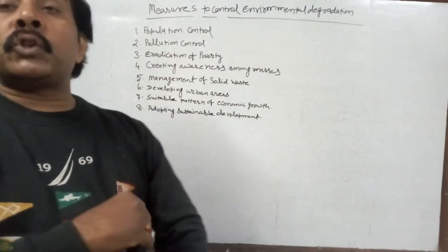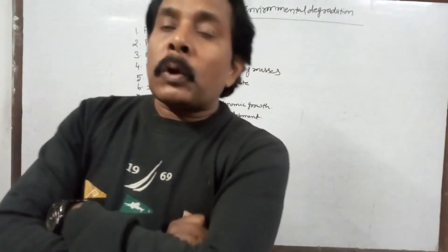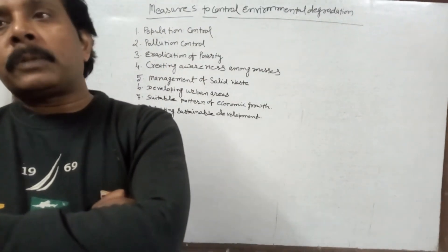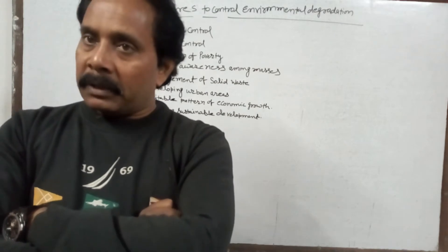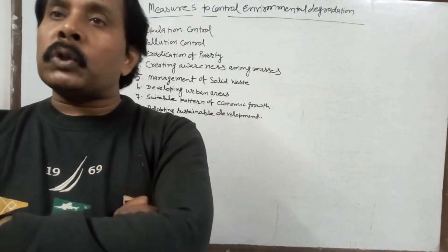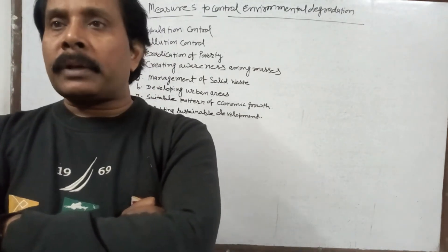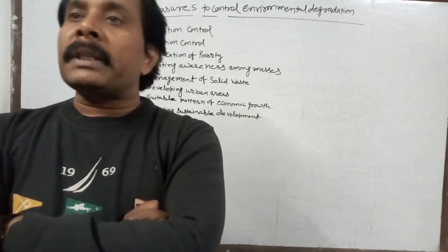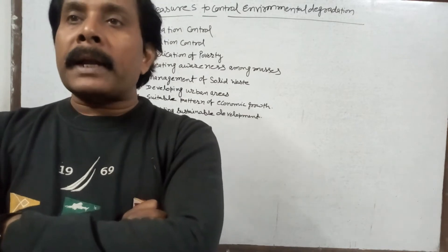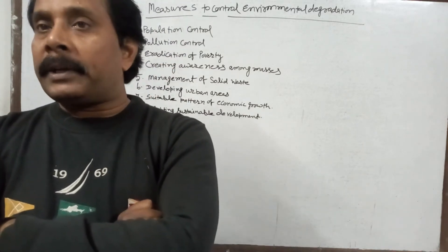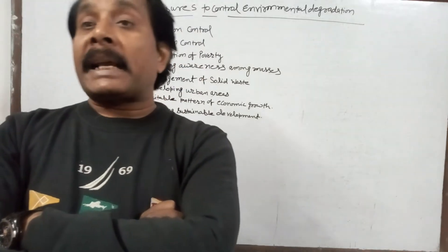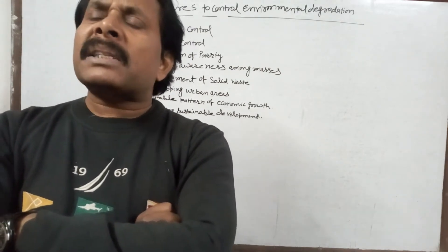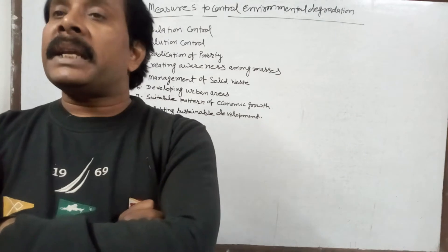Second is pollution control. Pollution control is a very basic measure to keep air, water, and noise pollution under check. Agricultural pollution should be controlled by motivating farmers to use environment-friendly fertilizers and pesticides. In simple words, farmers should use maximum organic farming.